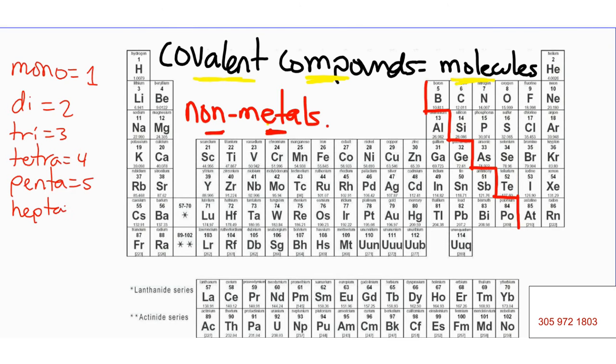Hexa is six. My apologies. Hexa is six. Hepta, seven. Octa, eight. Nona is nine. And deca is ten. Those are prefixes that we'll be using when we name molecules.